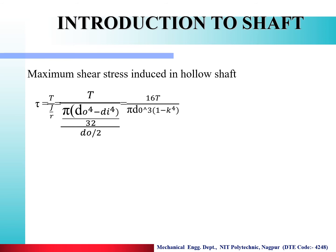For maximum shear stress induced in a hollow shaft, the same formula τ = T/J × r is used, but the polar moment of inertia for a hollow shaft is J = π/32 × (do⁴ − di⁴), with r = do/2. Taking k = di/do, and simplifying, the formula becomes: τ = 16T / (π × do³ × (1 − k⁴)). From this equation we can calculate the shear stress induced in the hollow shaft.